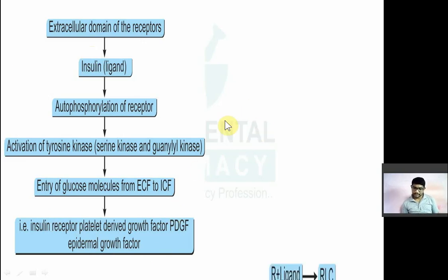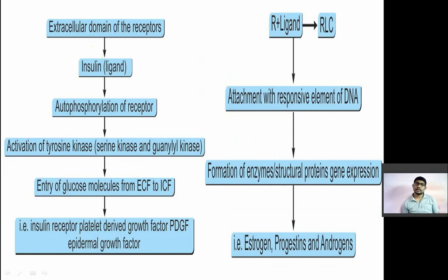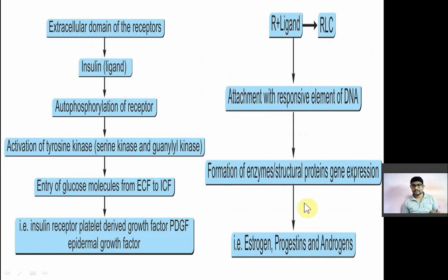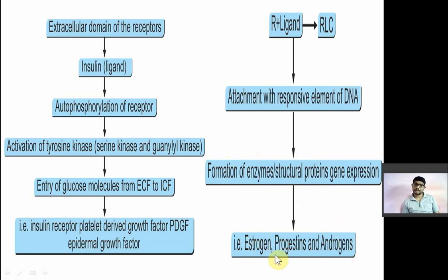The next one is the intracellular receptor. Drug will combine with the receptor to form a drug-receptor complex, which will go inside the cell, attach to a specific responsive element of DNA, and bring about changes in DNA. This causes changes in RNA and protein synthesis — formation of enzyme or structural protein through gene expression. Examples include estrogen, progesterone, and androgen, which act on intracellular receptors.